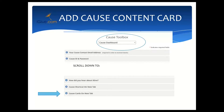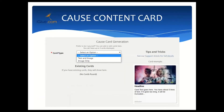Back in our iGive tools, in the cause administrator tools and the cause dashboard, we're going to scroll down below Cause Shortcut on New Tab to Cause Cards on New Tab. When we click that plus sign you'll see Cause Card Generation. This dropdown shows we currently have two options for card type: one Text and Image, and one Image Only.